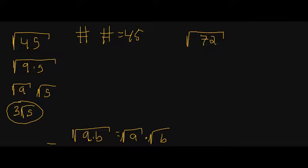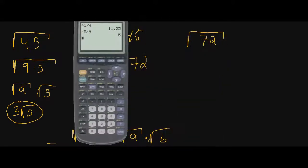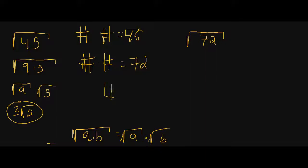Now we go to 72. The principle is still the same: what two numbers multiply to give me 72, but one of them is a perfect square? I'll grab my calculator and start at the bottom. 72 divided by 4 gives me 18. I know the square root of 4 is 2, so 4 times 18 gives me 72. But the reason I'm not going to use it yet is because I want to keep going — I want to see if there's a bigger perfect square.